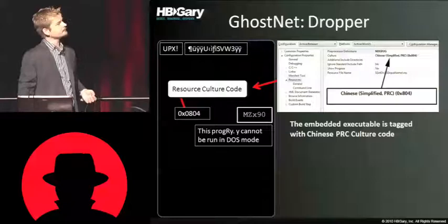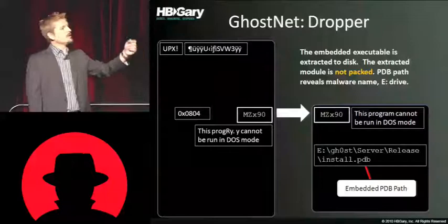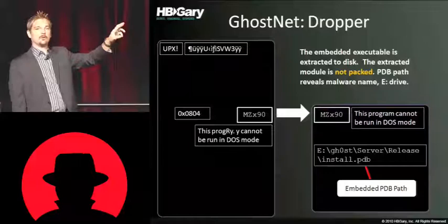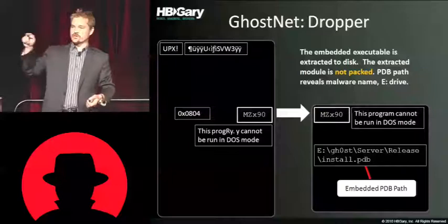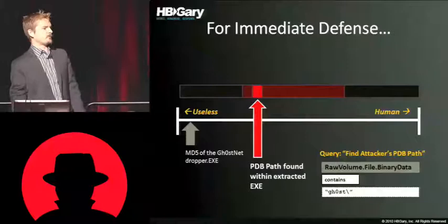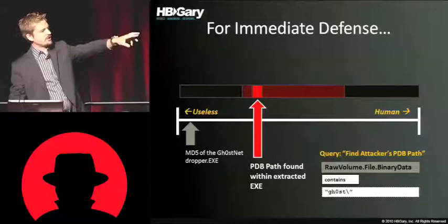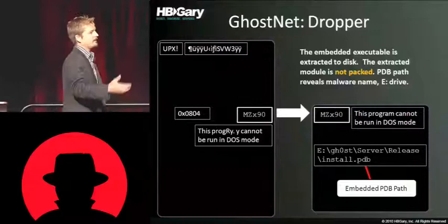The secondary binary pops out and it's not packed. Right out of it we can see what's called a PDB path. This is something that would have been easy to strip, but the bad guy didn't do it. We can actually see on his drive where he's storing the source code for this malware. This stuff is amazing — you wouldn't believe how often you see this. I actually got the guy's name one time. He had it in documents and settings slash his name slash subdirectory. We also know he has an E drive. So if I wanted to search my enterprise for Ghost RAT, I could search all drives or memory looking for GH0ST with a backslash — and I would probably find dropped binaries because they contain the PDB path.